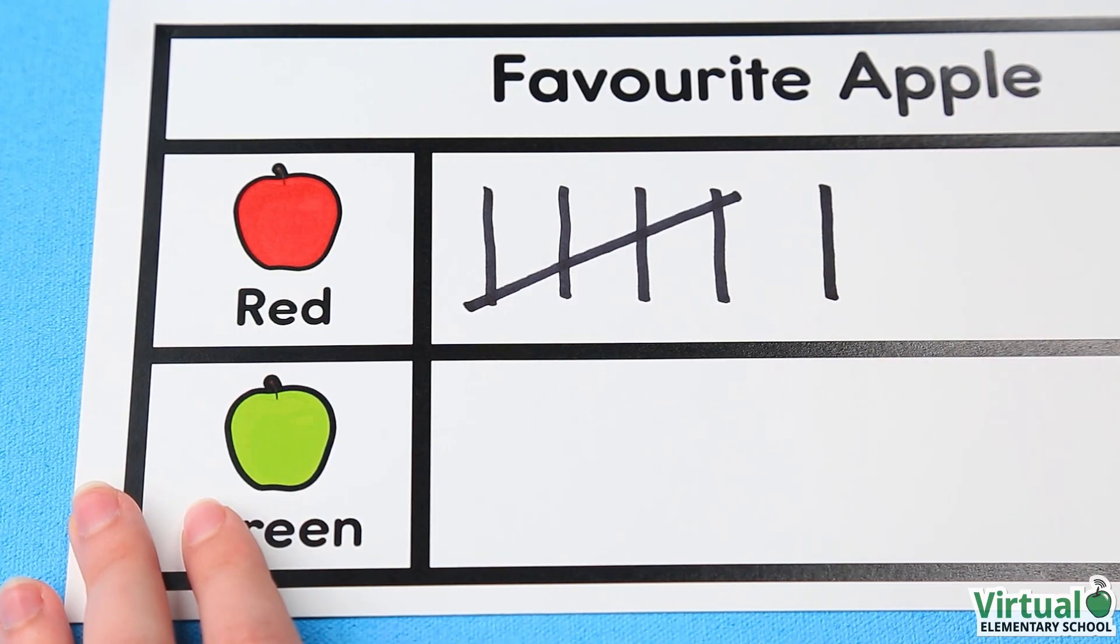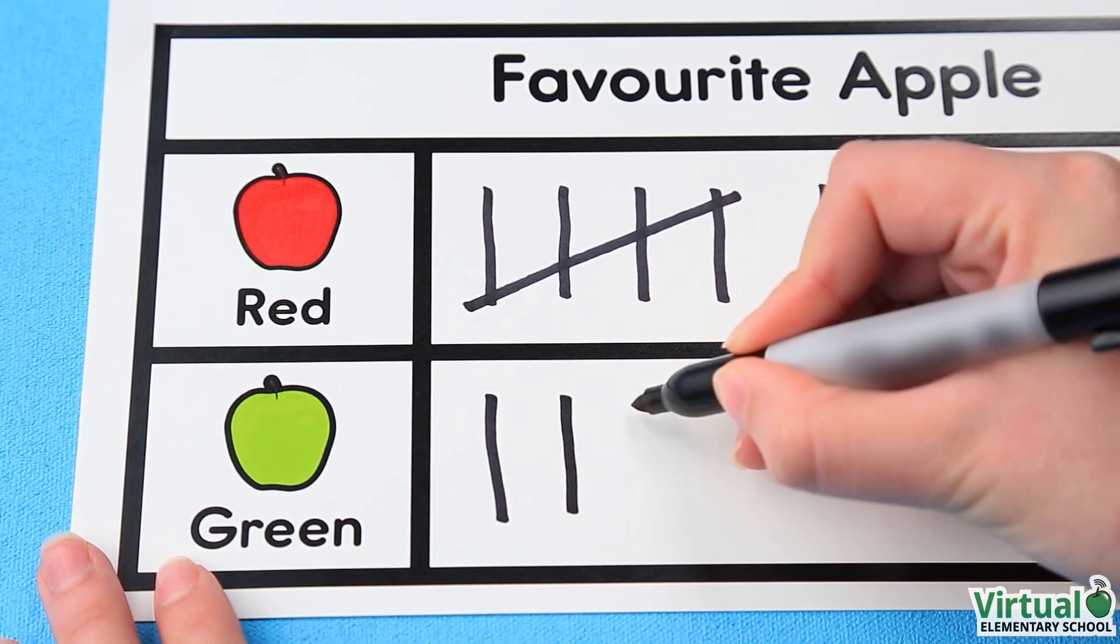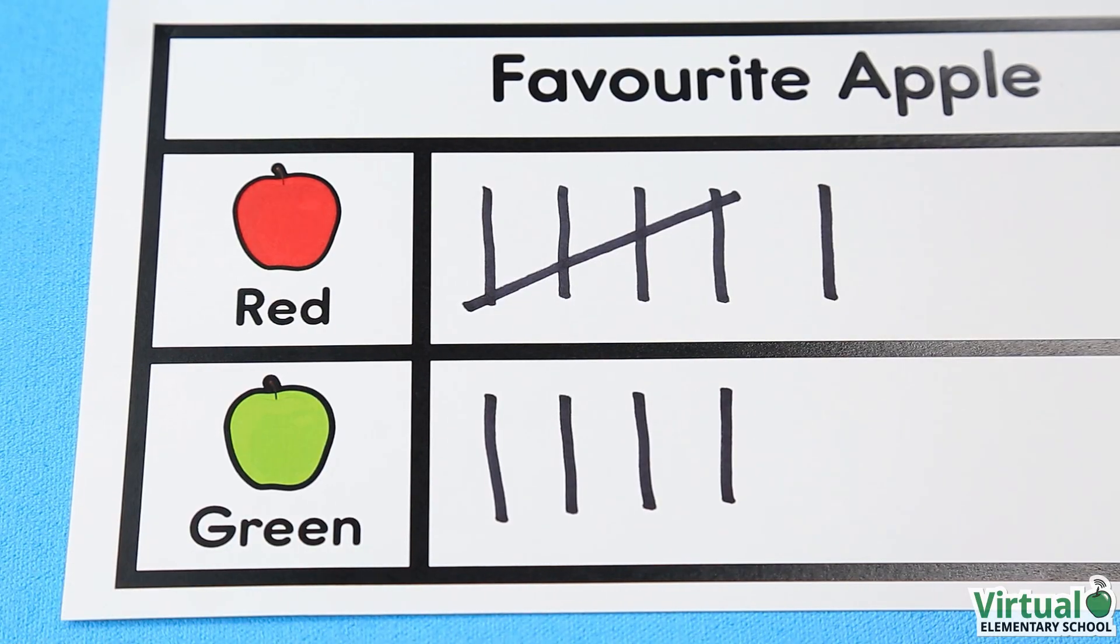4 friends liked green apples, so we draw 4 tally marks. Now we have a tally chart to help Hanna make some graphs.